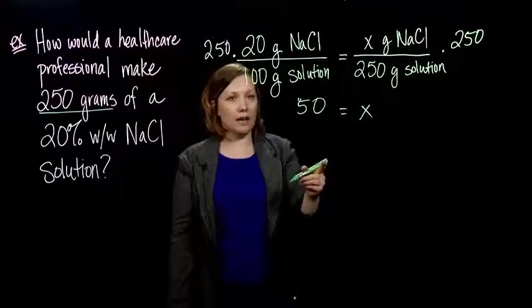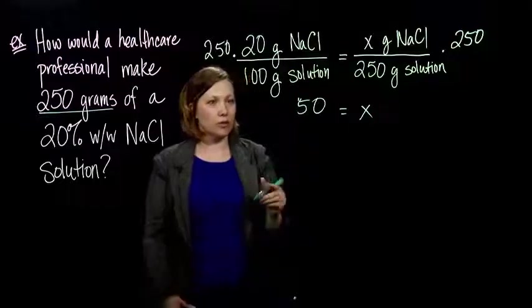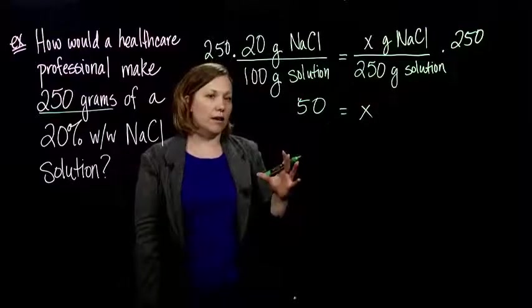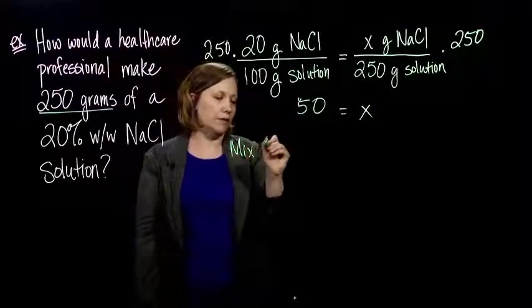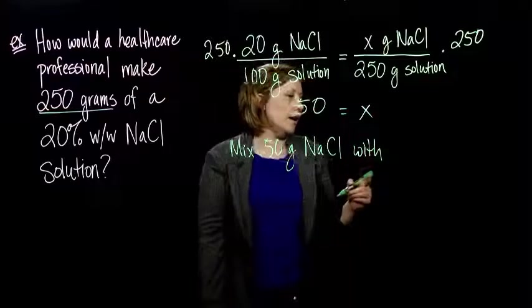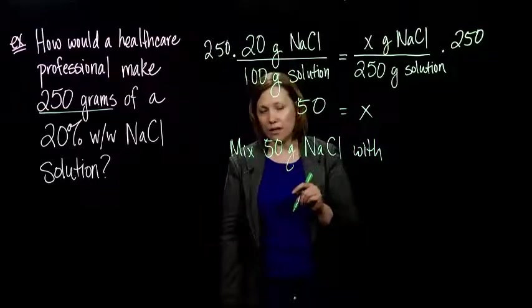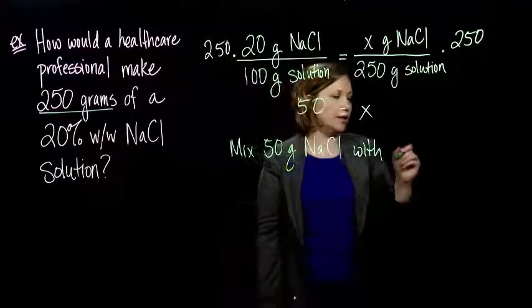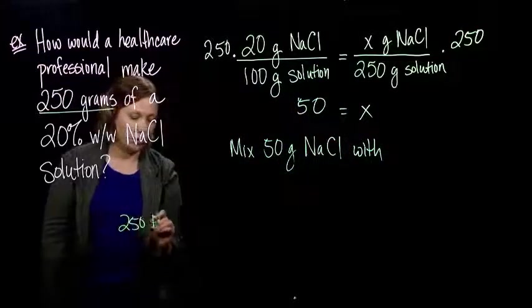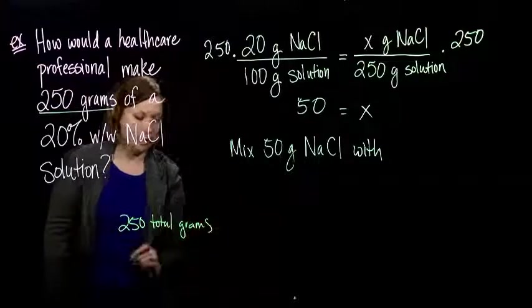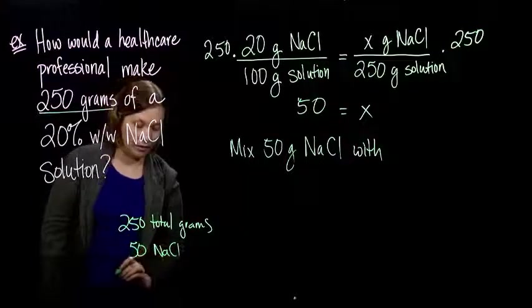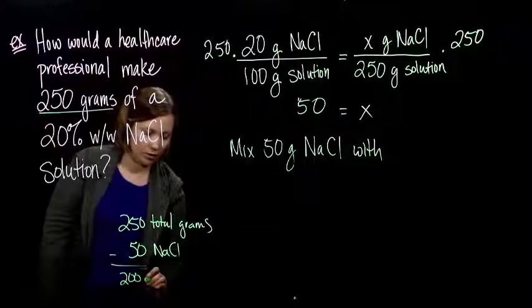We need 50 grams of sodium chloride in our solution. So for a healthcare worker to make this 250 grams of solution, they'd mix 50 grams of sodium chloride with how much diluent do we need? Well, we need 250 in our total. We have 250 total grams, and 50 of that is sodium chloride. So 250 minus 50 leaves me 200 grams of diluent.